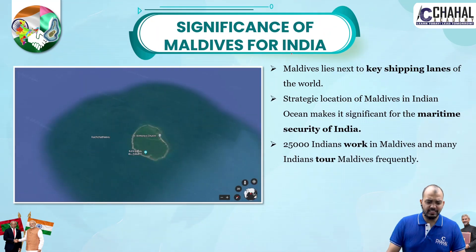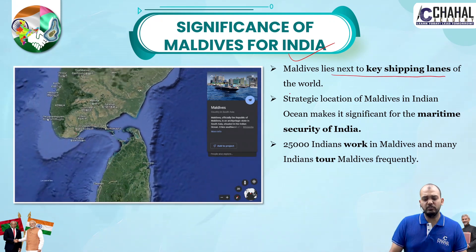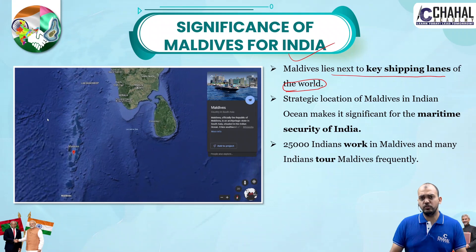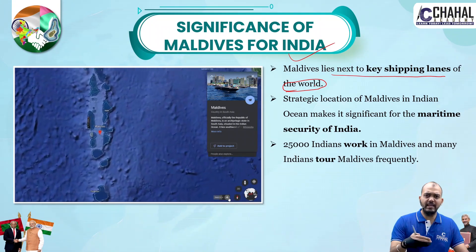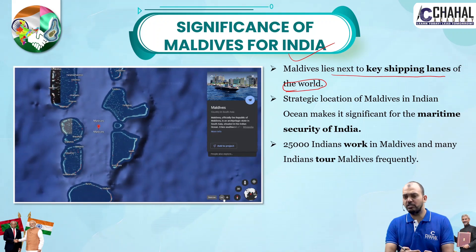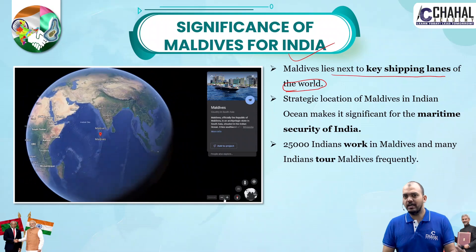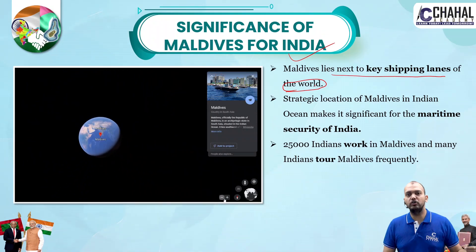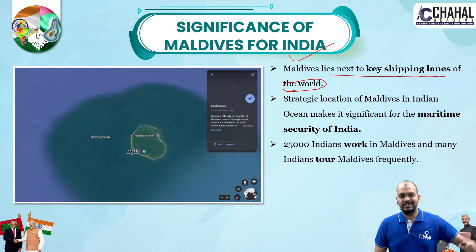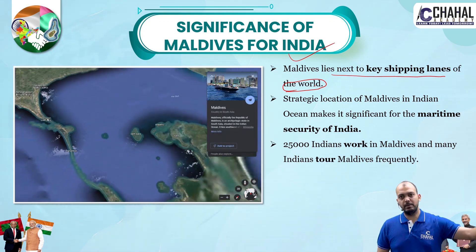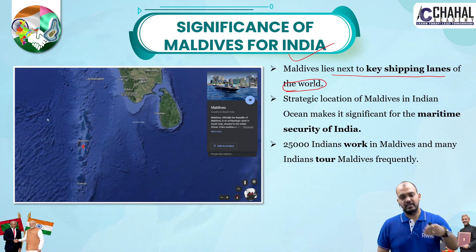Now let's talk about the significance of Maldives. Maldives lies next to the key shipping lanes of the world, specifically in the Indian Ocean — the shipping lanes are quite in the proximity of Maldives, making it important to secure India's interests. There are three key chokepoints in the Indian Ocean: the Strait of Malacca between Singapore and Sumatra Island in Southeast Asia, the Bab-el-Mandeb Strait in the Red Sea, and the Strait of Hormuz in the Persian Gulf.